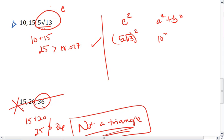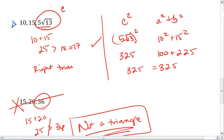And over here we have 10 squared plus 15 squared. 5 radical 13 squared is going to be 25 times 13, which is 325, and then we get 100 plus 225. So 325 and 325, these are equal, giving us a right triangle.